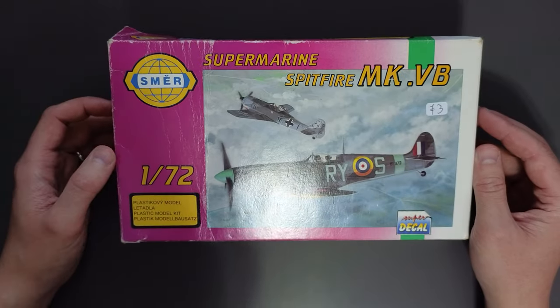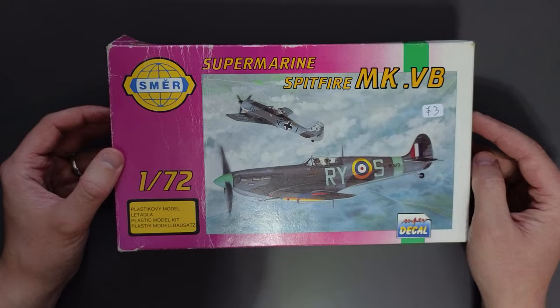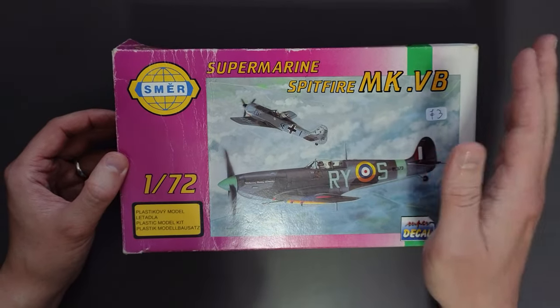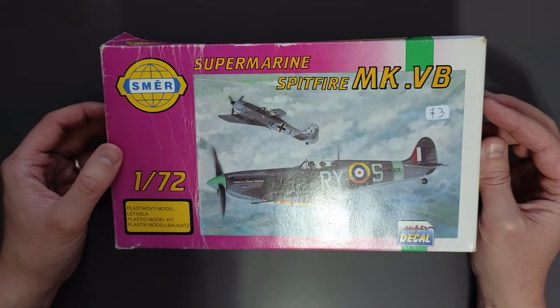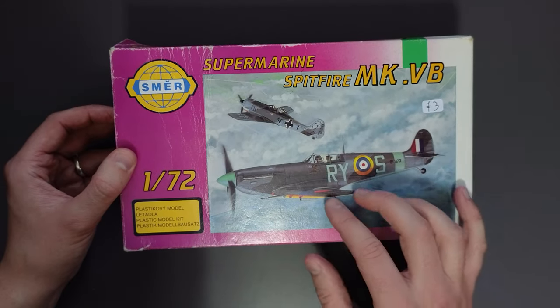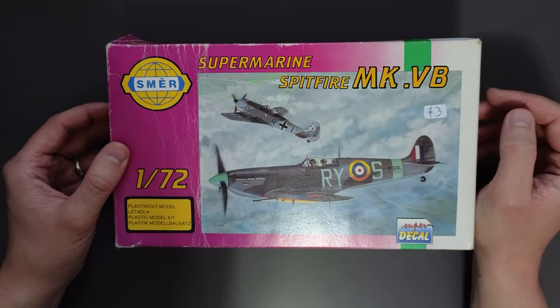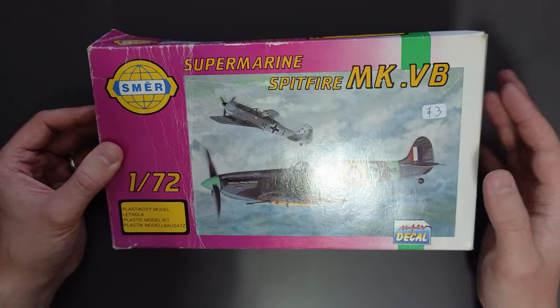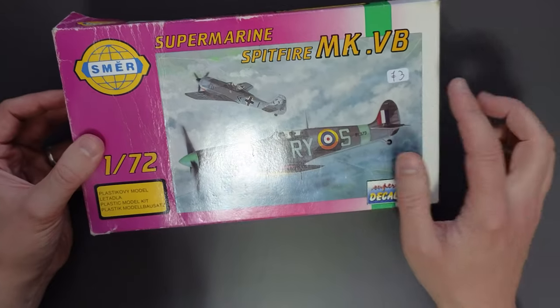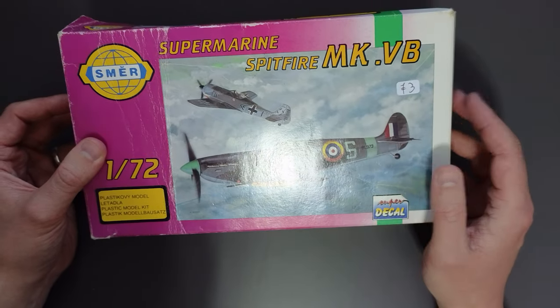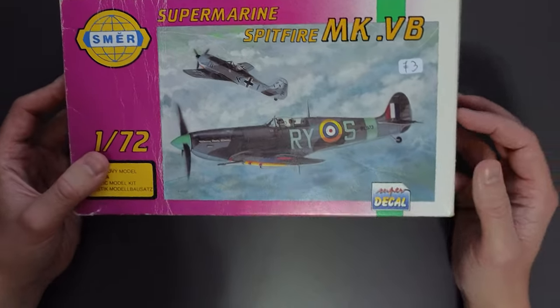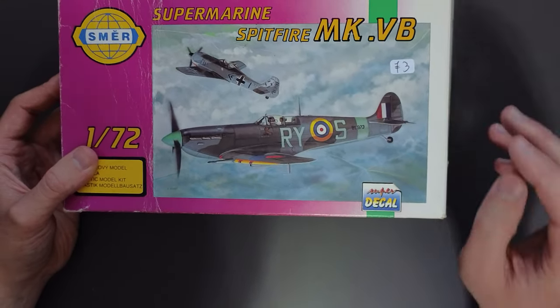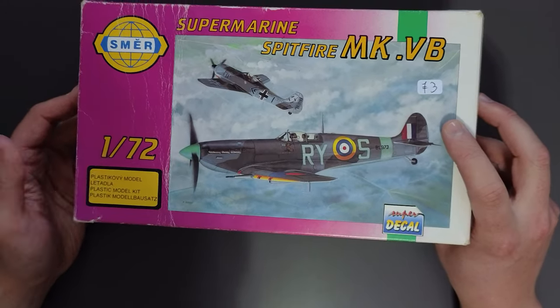Starting off on the front, we've got this quintessential 90s looking artwork style with the gradient between the pink and white. The image here of the Spitfire in combat with an FW 190 does make it quite exciting and encourage you to buy the kit. Over on the right hand side here you can see I've got a price tag of £3 which is what I paid for it at a model show. And then down here it says we've got super decals, so I'm not entirely sure what a super decal was but we'll have a look I'm sure.